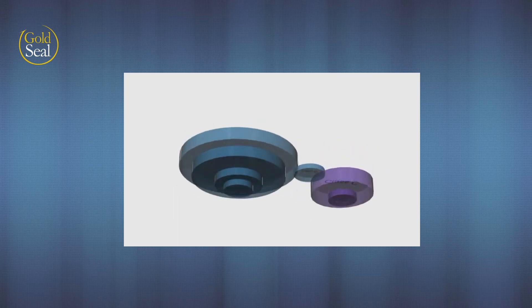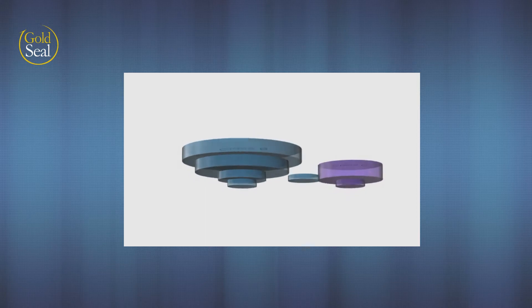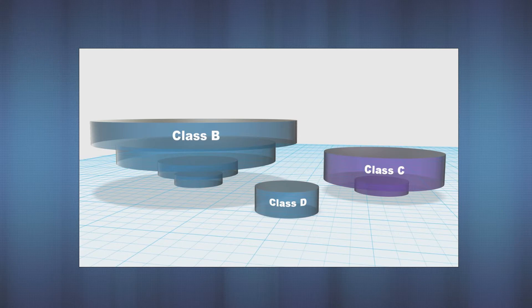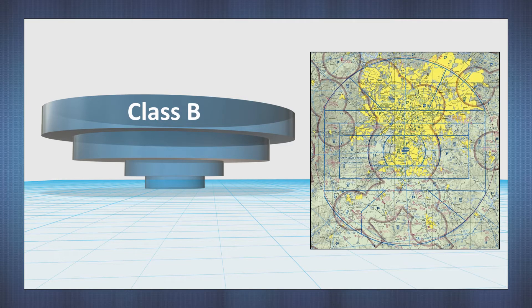These airspaces can have some pretty complex geometry. Class D is usually a simple cylinder, but Class C, and especially Class B, can have outright confusing volumes based on stacked layers. Class B is known for its inverted wedding cake shape.